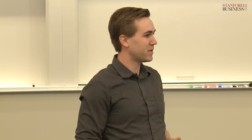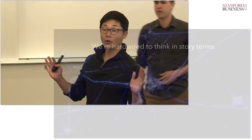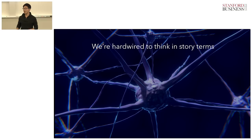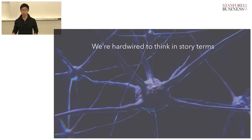So what's going on here? What can science tell us about how we're interpreting this information? And how can we use that information to tell better stories? Our brains are predisposed to think in story terms and in story structures. This impacts how we understand things, how we make sense of things, and what we choose to remember and what we choose to forget.